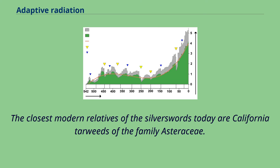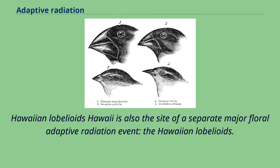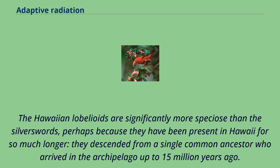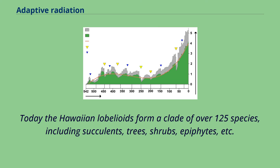Hawaii is also the site of a separate major floral adaptive radiation event: the Hawaiian lobelioids. The Hawaiian lobelioids are significantly more speciose than the silverswords, perhaps because they have been present in Hawaii for so much longer — they descended from a single common ancestor who arrived in the archipelago up to 15 million years ago. Today the Hawaiian lobelioids form a clade of over 125 species, including succulents, trees, shrubs, epiphytes, and more. Many species have been lost to extinction and many of the surviving species are endangered.